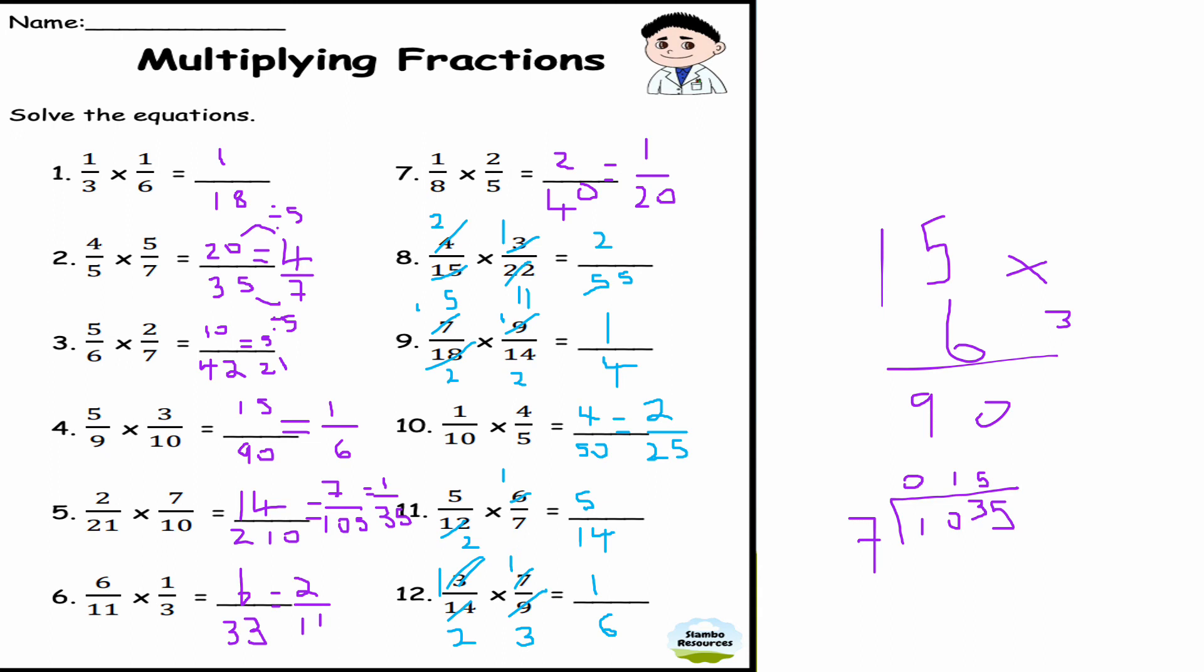Of course, this cancelling technique is a bit tricky, and I'm not expecting you to know it, but I'm trying to cancel down before I work out my answer to make the sum a bit easier. That's the purpose why I've done it on some questions and not on others. But if you're not very happy with this, then just times the numerators together, times the denominators together, and then simplify where appropriate and where necessary.